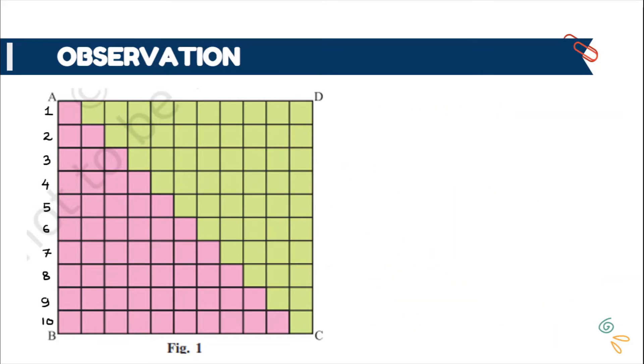So this shows that sum of the first 10 natural numbers is half into 10 into 11, which I can further simplify as half into 10 times (10 plus 1).